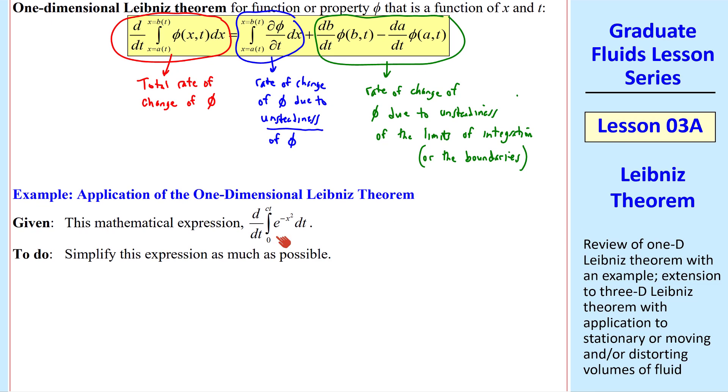I'll do a simple example. Consider this expression. We want to simplify it as much as possible. I'll use the 1-D-Leibniz theorem. Here, a(t), the lower limit, is actually not a function of time. It's simply zero. b(t), the upper limit, is ct. And we also have to calculate del phi del t. Phi itself is e to the minus x squared, as we see here, compared to here. And I just realized that this should be an x instead of a t. Note that our phi is not a function of time here, but in general it can be. So this term, with a del phi del t, is zero.